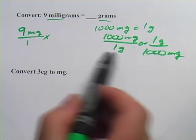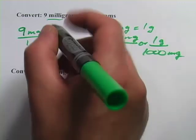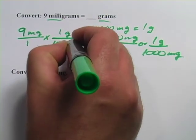And I want to choose one of these conversion factors where milligrams, which is on the top here, is on the bottom over here, so it'll cancel. So 1 gram divided by 1,000 milligrams.